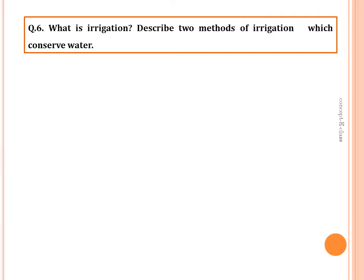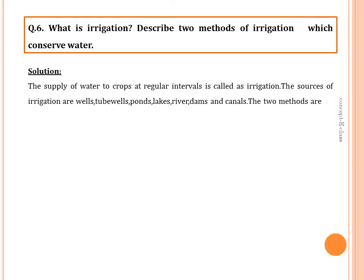Question six: what is irrigation and describe two methods of irrigation which conserve water. The supply of water to crops at regular intervals is called irrigation. Sources of irrigation include wells, tube wells, ponds, lakes, rivers, dams, and canals. The two methods that conserve water are the sprinkler system and the drip system.